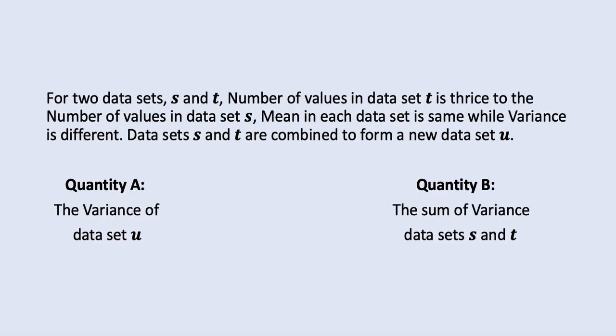Now moving to the question, we are provided with two data sets s and t, in which the number of values in data set t is twice the number of values in data set s. So we are provided with the relationship of the number of values, and the mean is equal in both, while variance is different. Data sets s and t are combined to form a new data set u. This is a quantitative comparison question, in which quantity A is the variance of data set u, and quantity B is the sum of variances of data sets s and t.